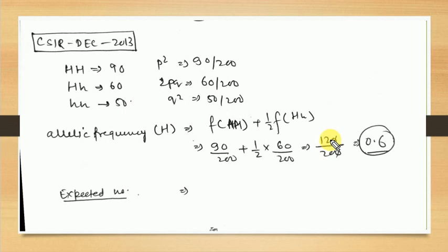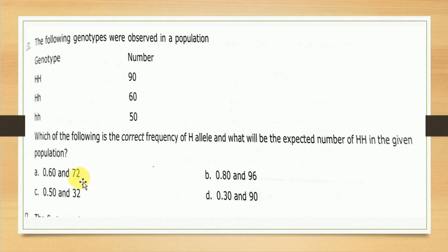The frequency of the H allele is 0.6. If you check the options, 0.6 is the correct answer. This was the CSIR 2013 question.